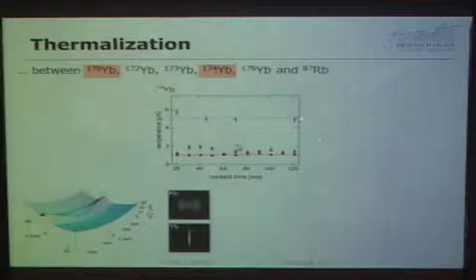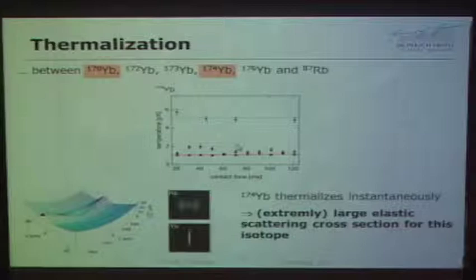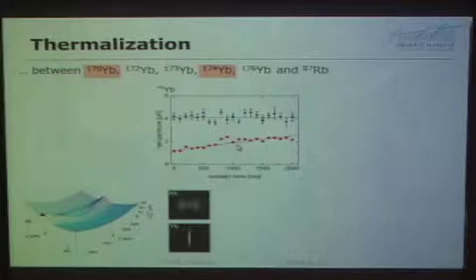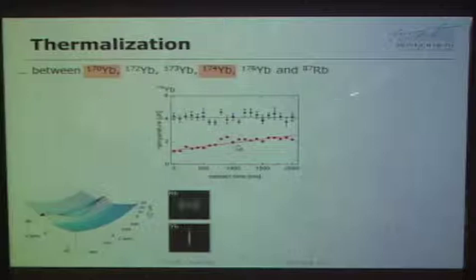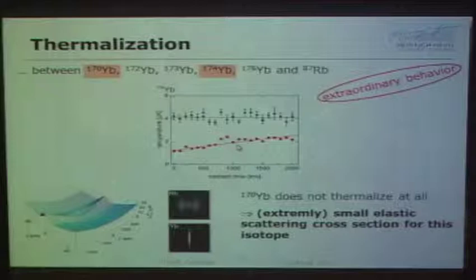For ytterbium-174, we were not even able to observe a thermalization rate, because it takes about 20 milliseconds before we can take any decent data point, and by that time ytterbium-174 was already thermalized with rubidium under essentially any conditions. This means there must be an extremely large elastic cross section — extraordinary behavior. Conversely, for ytterbium-170 we can wait for seconds and see no thermalization whatsoever under the exact same conditions, indicating an extremely small elastic scattering cross section.